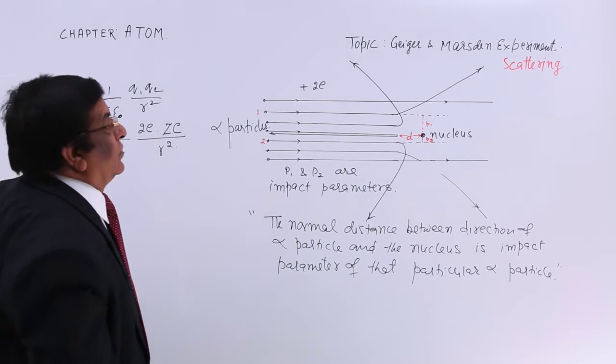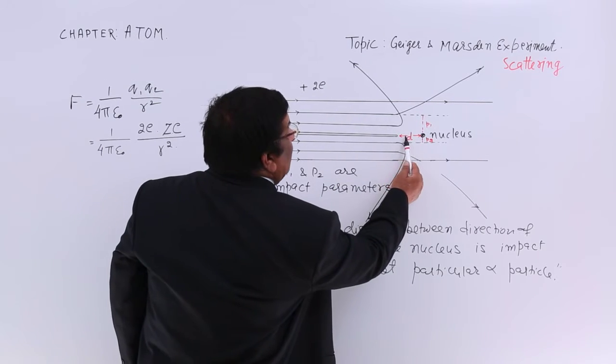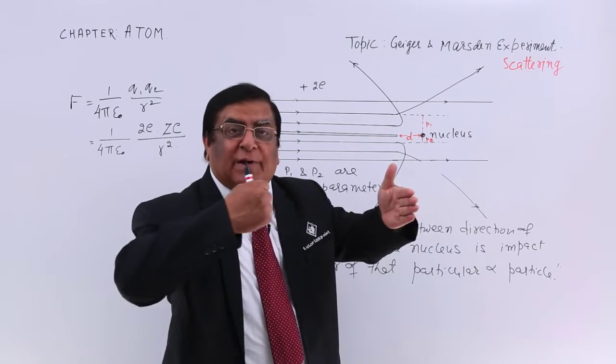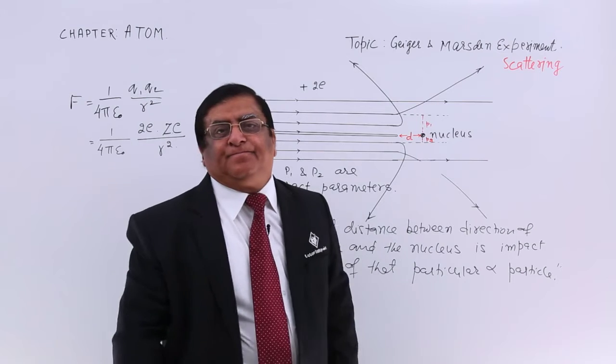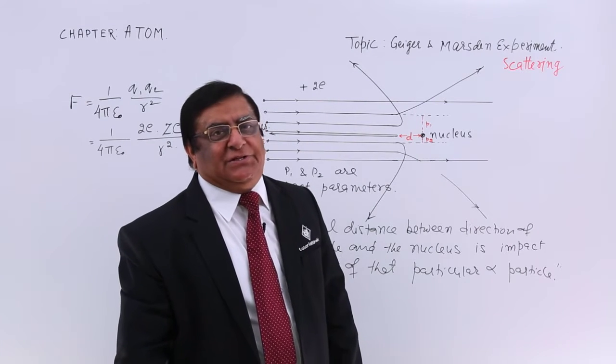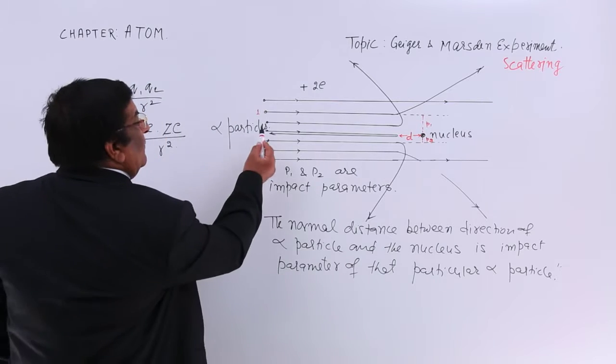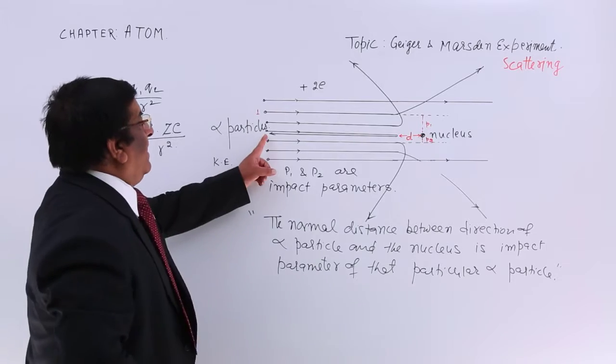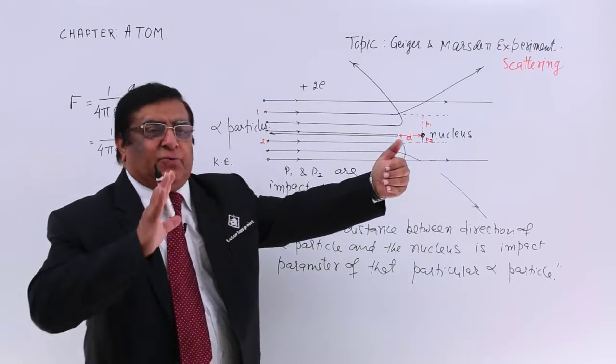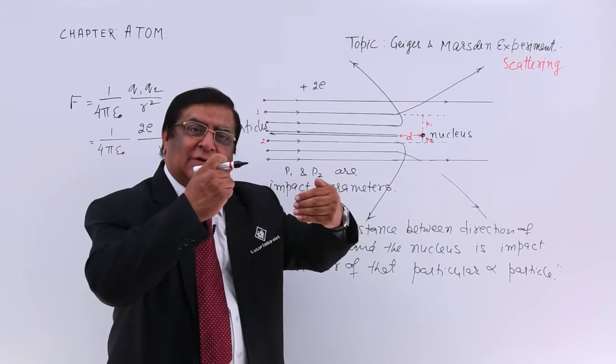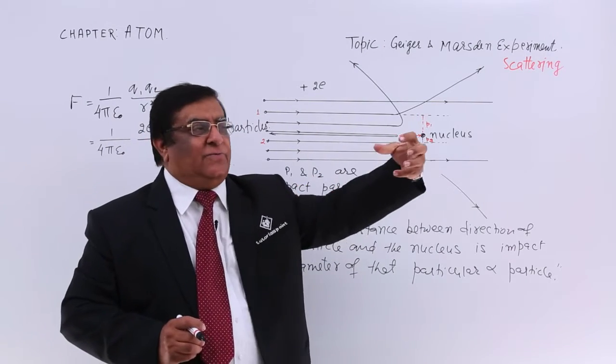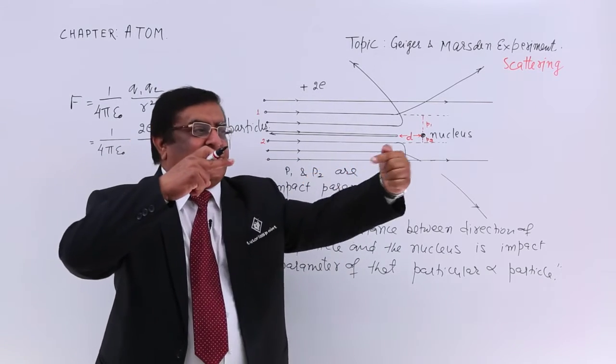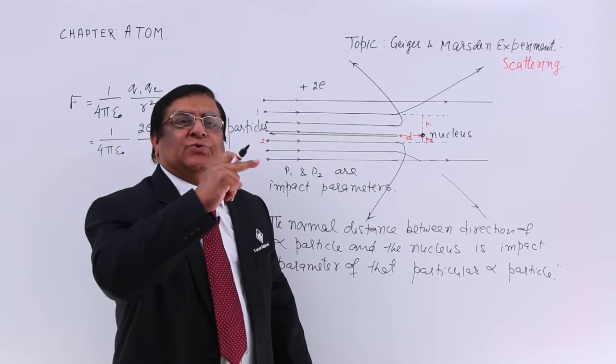So, the force becomes high, high, high and one location comes when the force is so much that it gets reflected back. In physics, what do we say that situation? The answer is here, this alpha particle has got certain kinetic energy. There is a force because of that force in opposite direction, the velocities keep on decreasing. Retardation is there, force is there in this direction. So, velocity is in this direction, acceleration is in this direction, so velocity goes on decreasing.